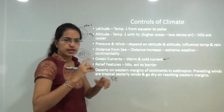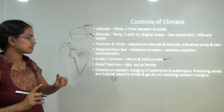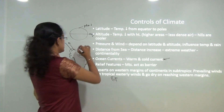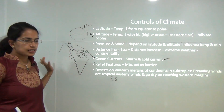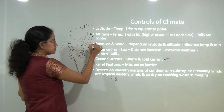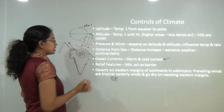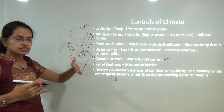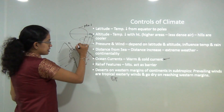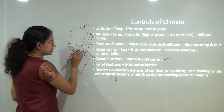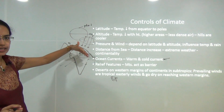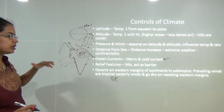Ocean currents are classified as warm or cold currents, and thermohaline circulation in ocean water also plays a role. In India, the importance of the Himalayas cannot be neglected — they block cold waves from central Asia and the Mongolian region. The monsoon winds collide with the Himalayas, resulting in abundant rainfall. The mountains act as a barrier preventing cold winds and leading to rainfall.